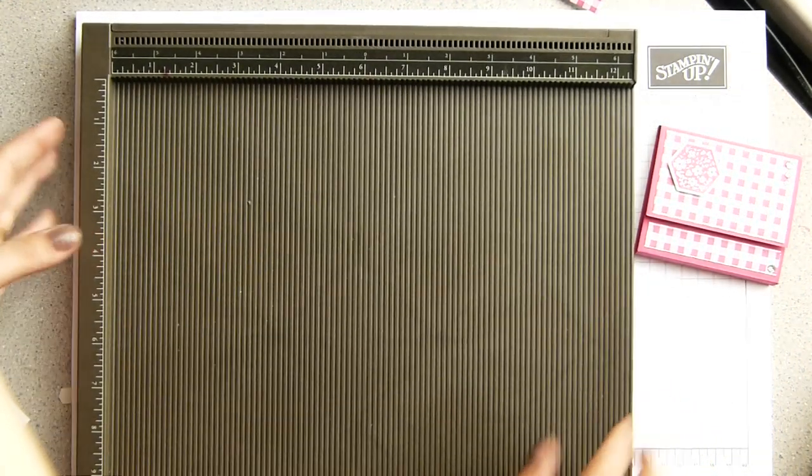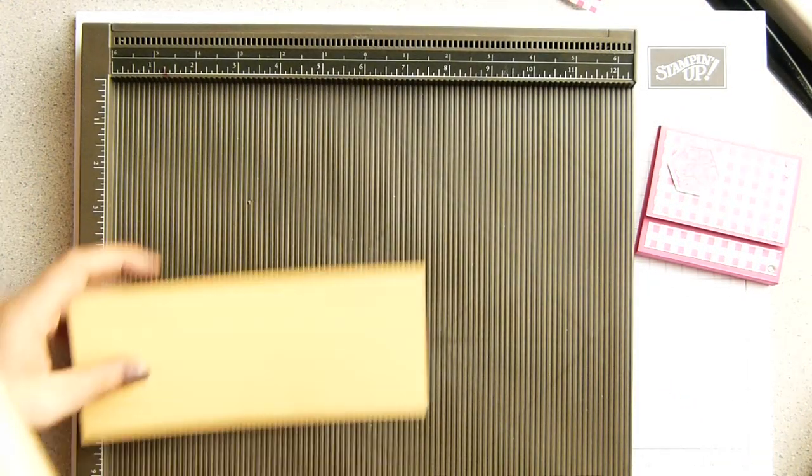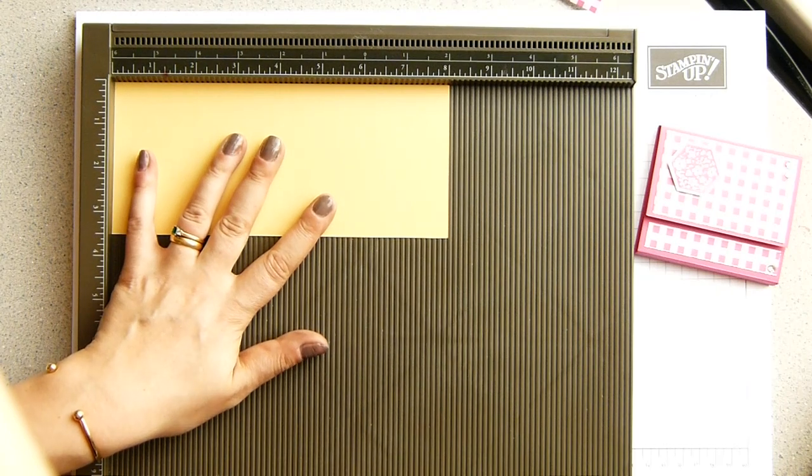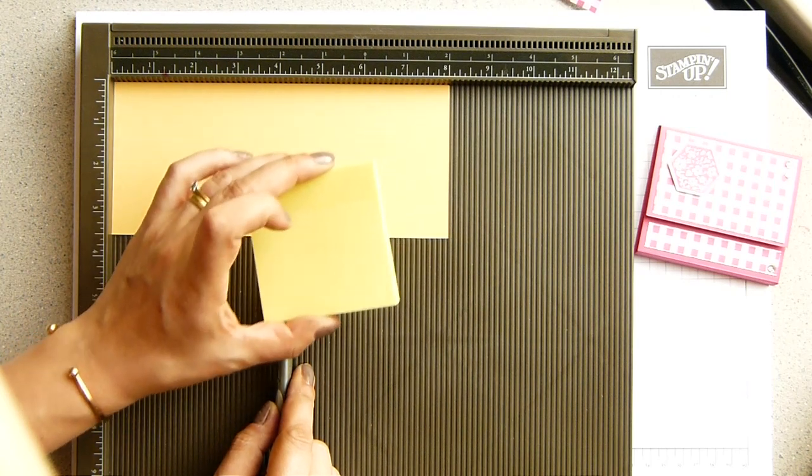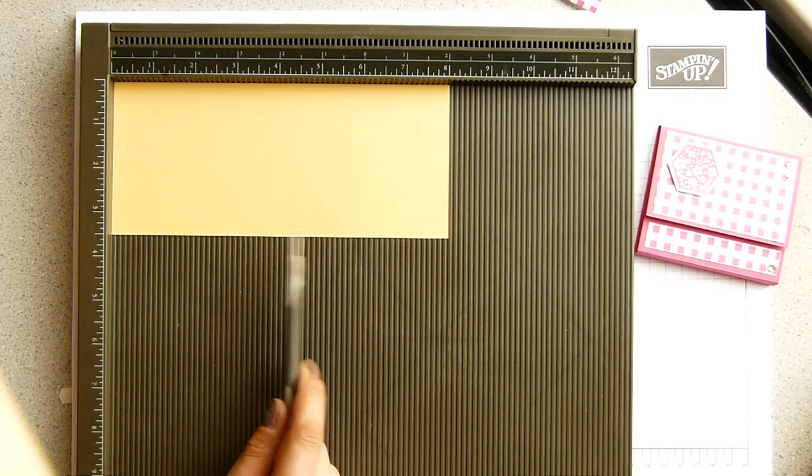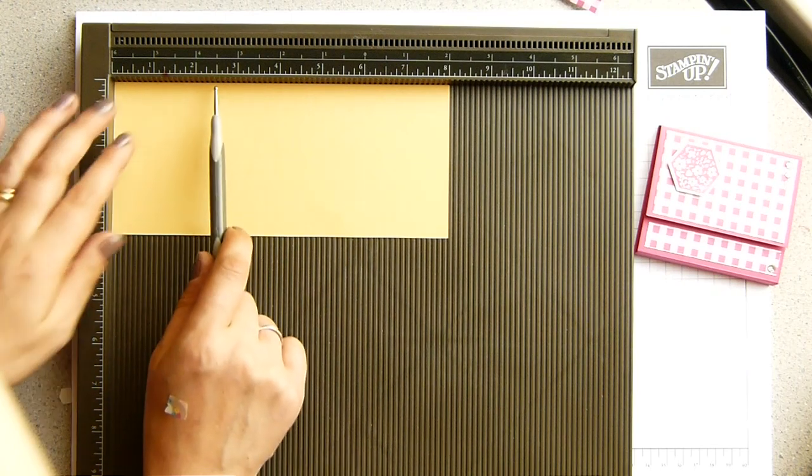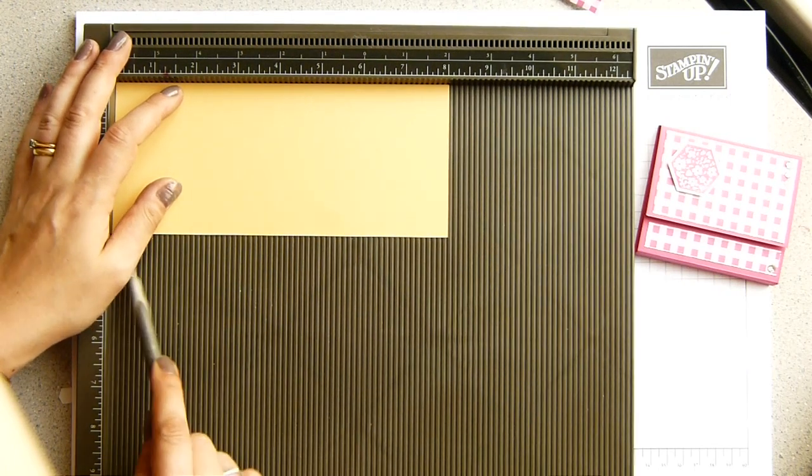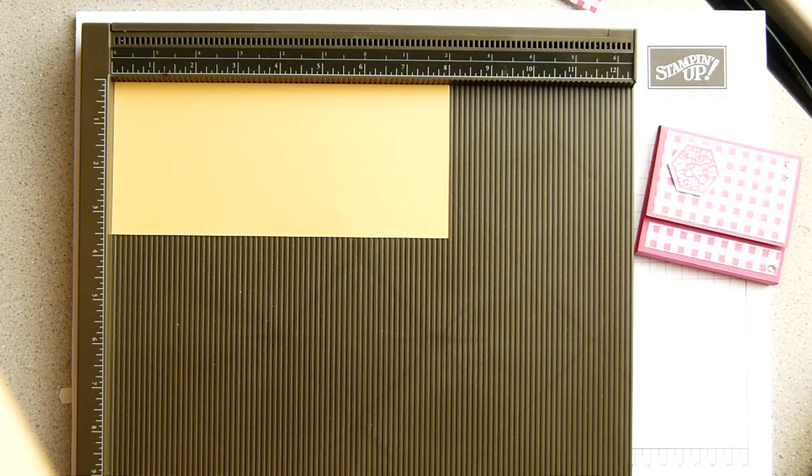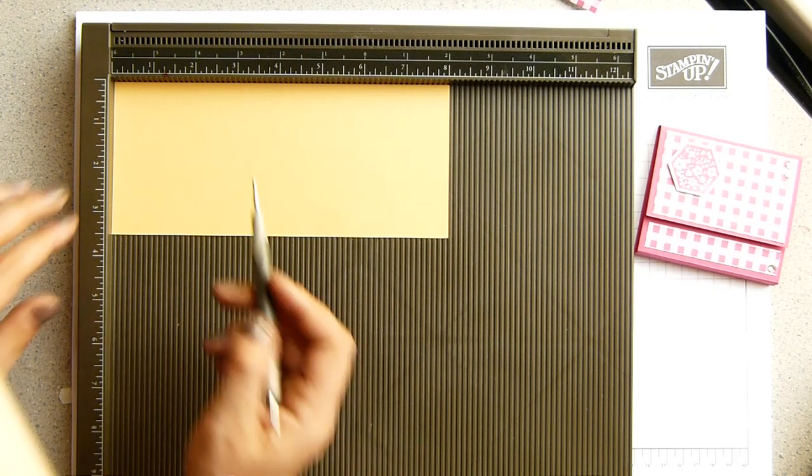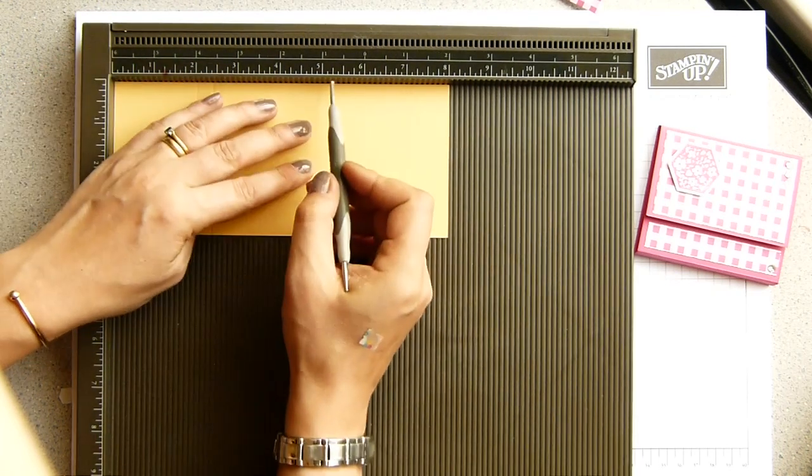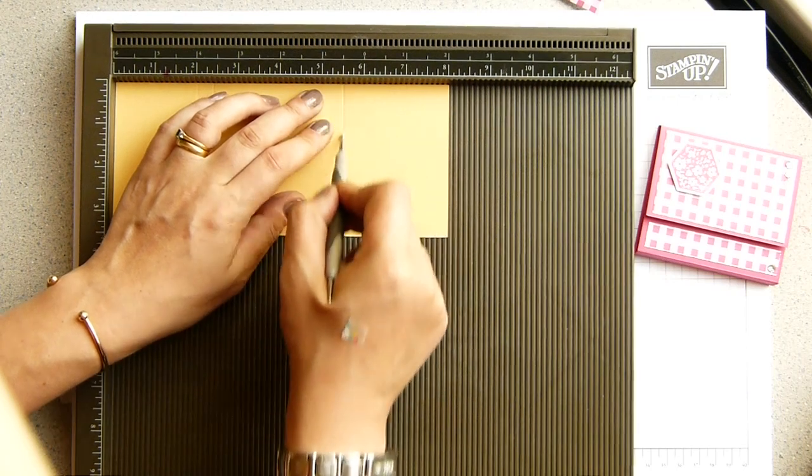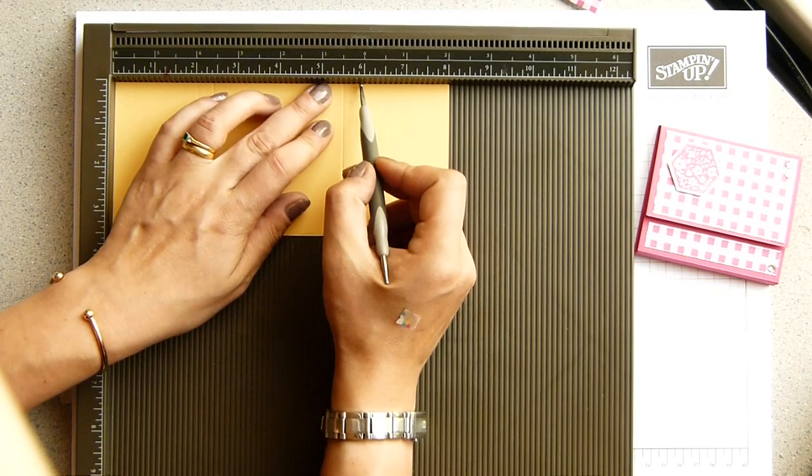And I'm working in inches, and I will give you metric measurements. I've got a piece of the Sew Saffron cardstock that measures eight by three and a half, because I'm gonna be working with a three by three post-it note. But in centimeters, that is roughly nine by roughly 20, sort of give or take a few mil. And in inches, we're gonna score it at two inches, two and three-eighths of an inch, five and a half inches, and five and seven-eighths.